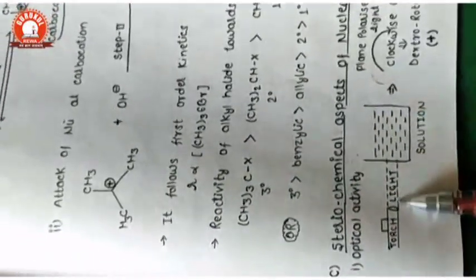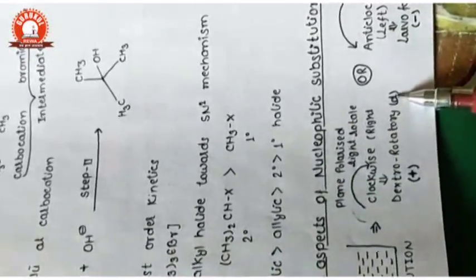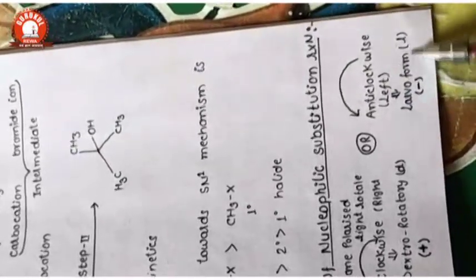Now some common terms in stereochemistry: optical activity means that if we pass light through a solution, the light can rotate clockwise or anti-clockwise. If it rotates clockwise, the solution is called dextrorotatory, represented as small d or plus. If the light rotates anti-clockwise, it is called levorotatory, represented as small l or minus.